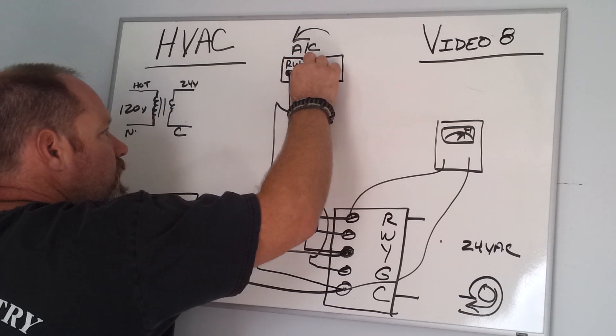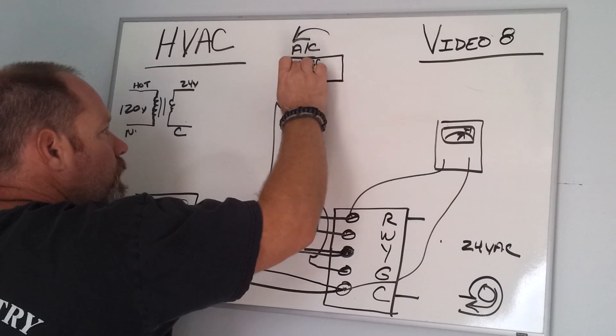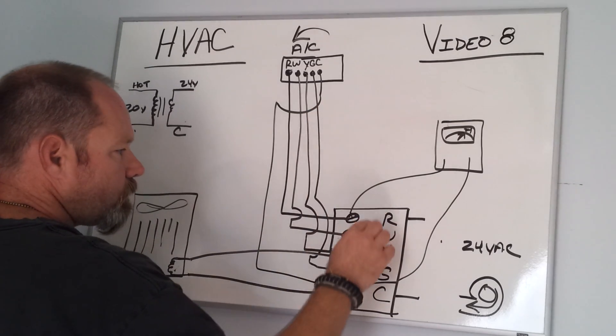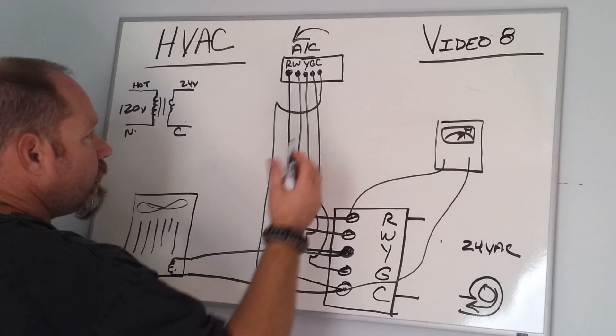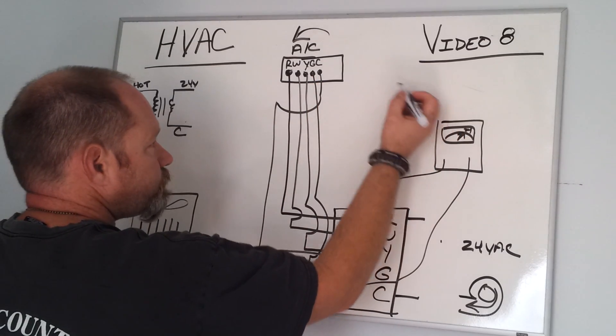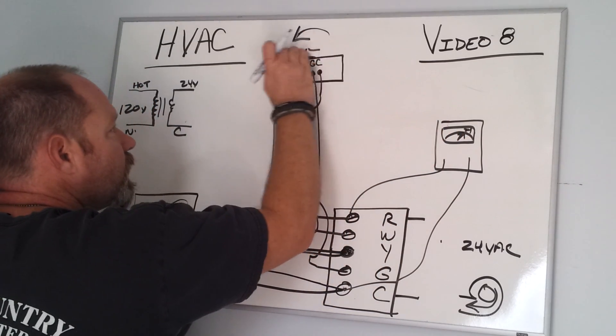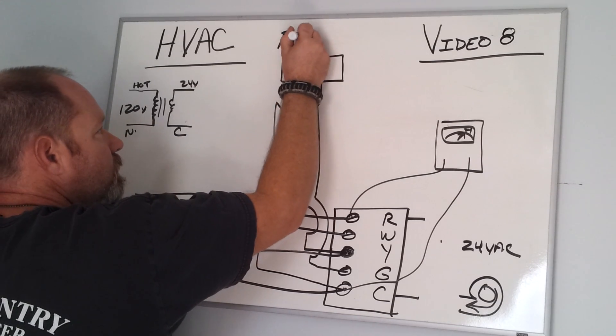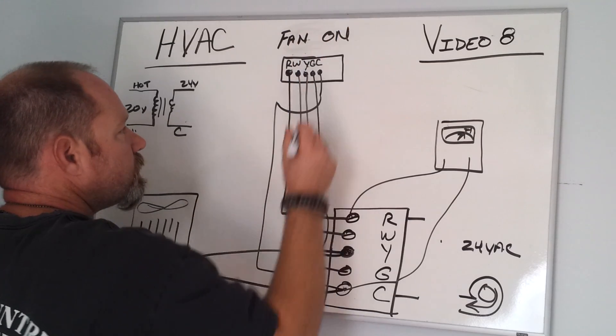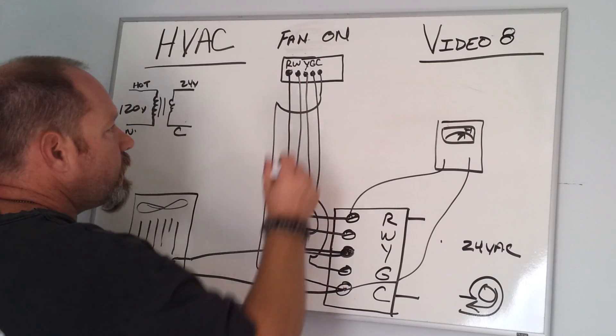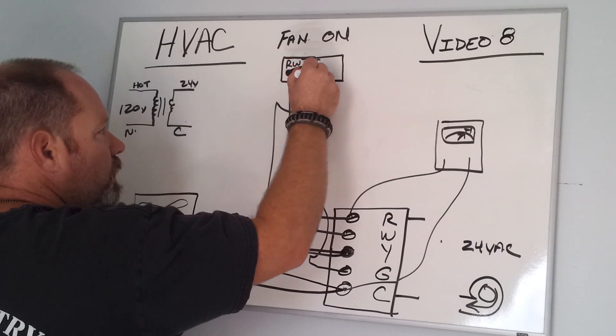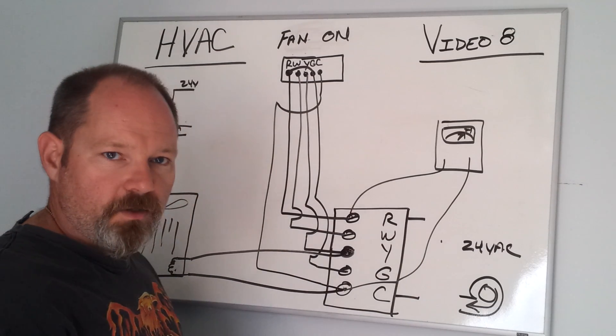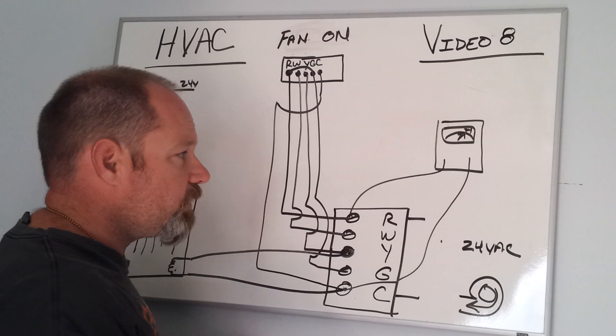There is one other thing when it comes to this type of system—a single-stage heating and cooling. In future videos we can get into multi-stage. The other thing is on your thermostat, if you just set the fan to the on position and nothing else is going on, that is a signal that goes directly from R to G. G comes down to the fan, turns the fan on. That would be used for circulating air, more filtration, whatever the case may be.